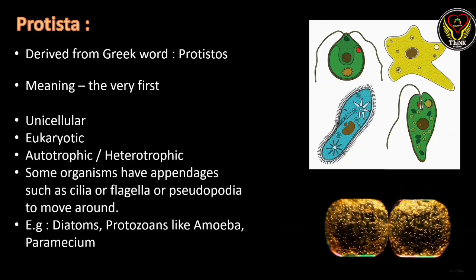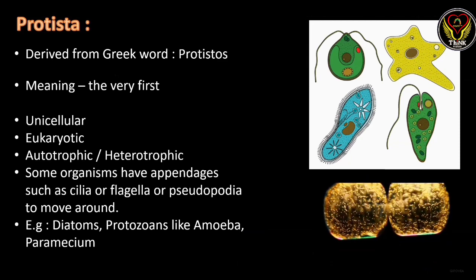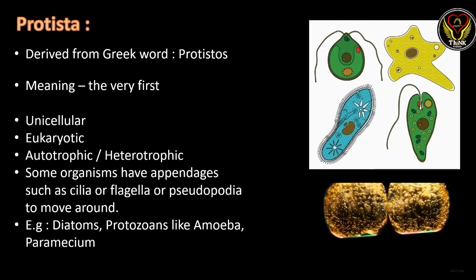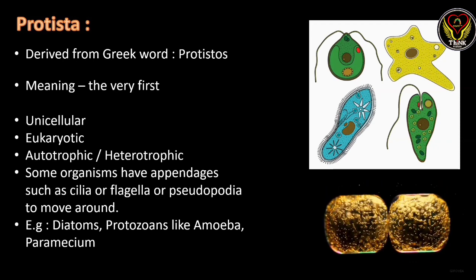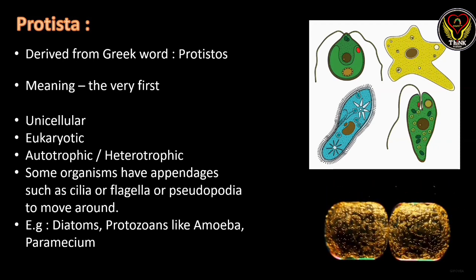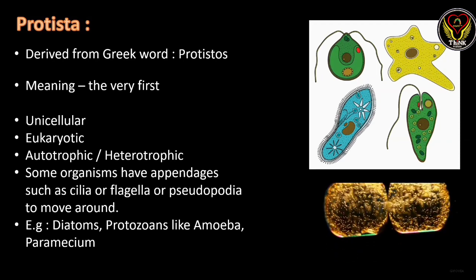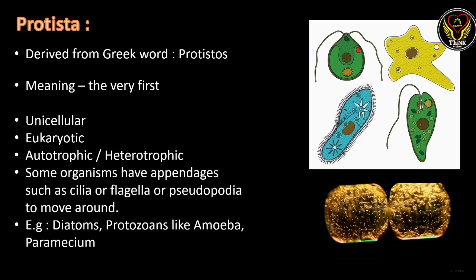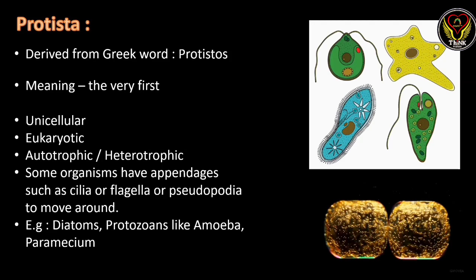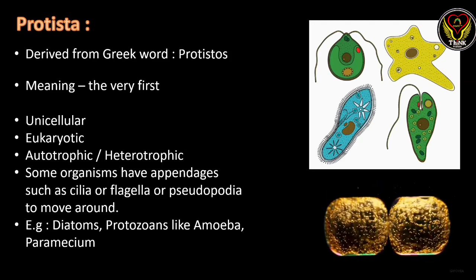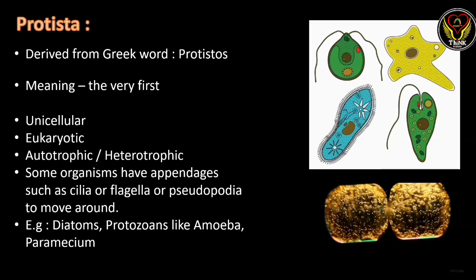The second kingdom is Protista, derived from the Greek word 'protistos', meaning the very first organisms, which means more primitive. The cell type is unicellular and eukaryotic — unlike the previous kingdom which is prokaryotic. The mode of nutrition is autotrophic and heterotrophic. Some organisms have appendages such as cilia, flagella or pseudopodia for locomotion. The best examples are diatoms, and protozoans like amoeba and paramecium.